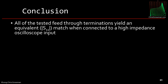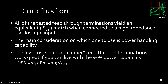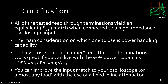So what did we learn? All of the tested feed-through terminations yielded an equivalent S11 match when connected to a high impedance oscilloscope input, and probably any quality feed-through termination would be the same — so it really doesn't matter which one you use. The main consideration is the power handling capability you need. The low-cost Chinese copper feed-through terminations work great if you can live with quarter watt power capability — remember a quarter watt is 24 dBm or 3.5 volts RMS. You can also improve the input match to your oscilloscope or almost any load with the use of a fixed inline attenuator.